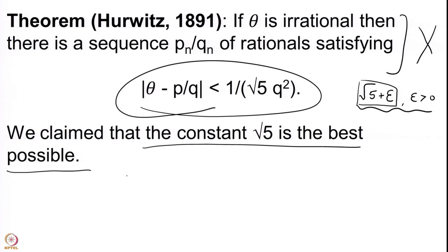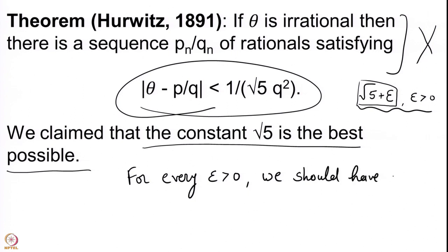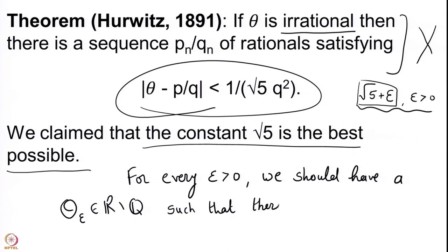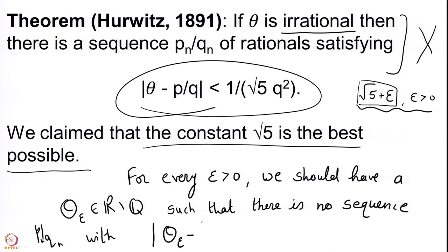We need to give an example. For every positive ε, we should find an irrational number theta_ε in ℝ \ ℚ such that there is no sequence p_n/q_n with |theta_ε − p_n/q_n| < 1/((√5 + ε)q_n²).